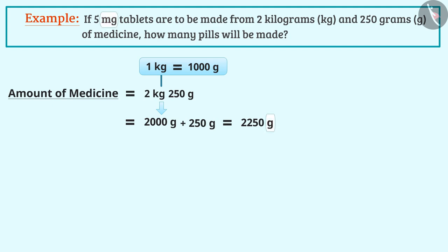Still, the units are not same. Here, the g has to change to mg. Since 1 g is equal to 1000 mg,